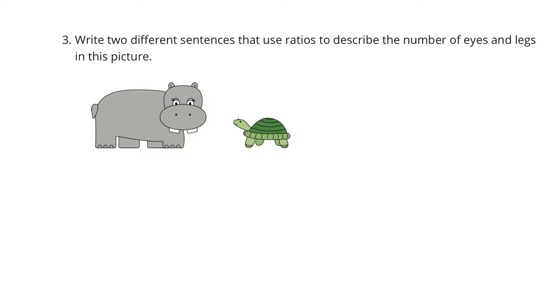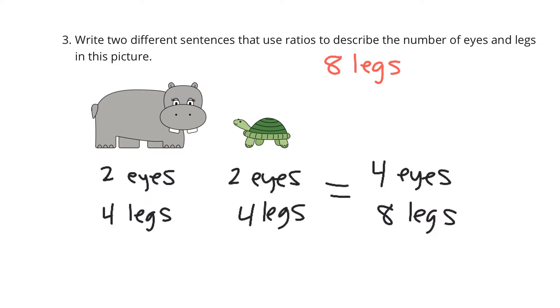Let's move on to question 3. Write 2 different sentences that use ratios to describe the number of eyes and legs in this picture. Well, this animal has 2 eyes and 4 legs. This animal has 2 eyes and 4 legs. And so, our total number of eyes here is 4 eyes and 8 legs. Well, now we need to write 2 different sentences. And so, let's just kind of go like this. 8 legs, 2, 4 eyes. And we can simplify that down to 4 legs to 2 eyes or even 2 legs to 1 eye.